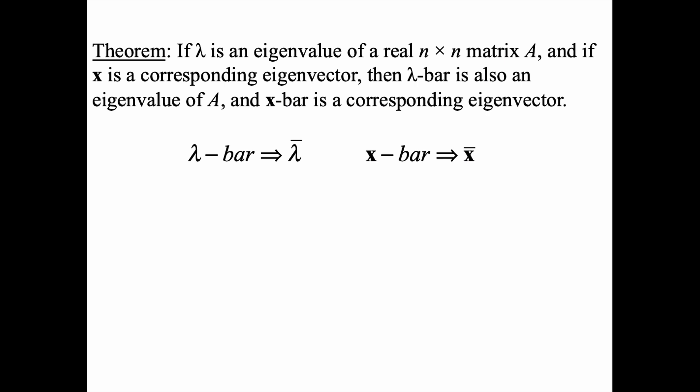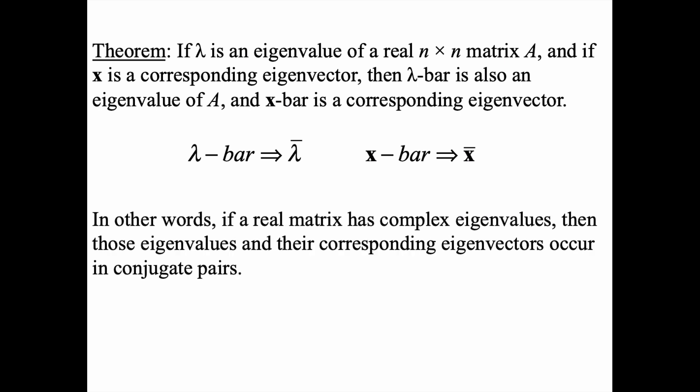Both lambda bar and x bar are usually written with a bar on top, which simply means the complex conjugate of lambda and x vector. In other words, this theorem states that if a real matrix has complex eigenvalues, then those eigenvalues and their corresponding eigenvectors must occur in conjugate pairs.